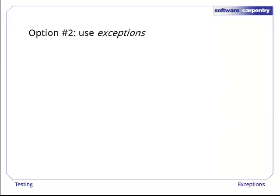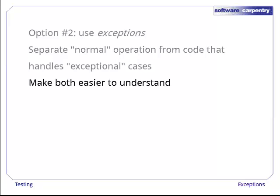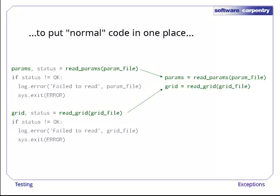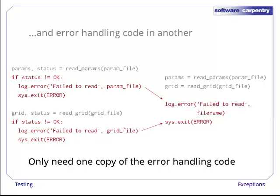Luckily, there's a better way. Modern languages like Python allow us to use exceptions to handle errors. More specifically, using exceptions allows us to separate the normal flow of control from the exceptional cases that arise when something goes wrong. This makes both easier to understand. Basically, what exceptions allow us to do is take the code we were just looking at and put the normal parts in one place and all the error handling parts in another. And as a fringe benefit, this often allows us to eliminate redundancy in our error handling.